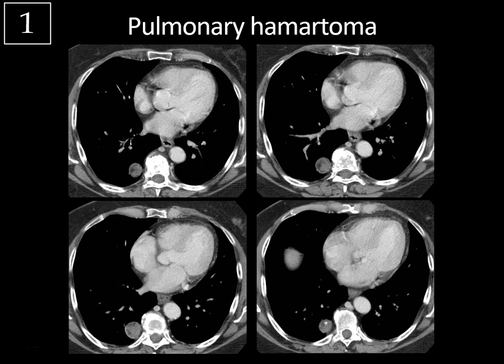This calcification is sometimes described as popcorn-like. A well-circumscribed mass that's been stable over time and has fat in it is virtually pathognomonic for pulmonary hamartoma. There are less common causes of fat-containing pulmonary nodules: pulmonary lipomas that are pure fat, lipoid pneumonia from aspiration of a fat-containing substance, and very rarely metastatic disease with fat-containing nodules like liposarcoma or renal cell carcinoma — but you'll find a primary malignancy in those cases and the nodules will typically be increasing and multiple.